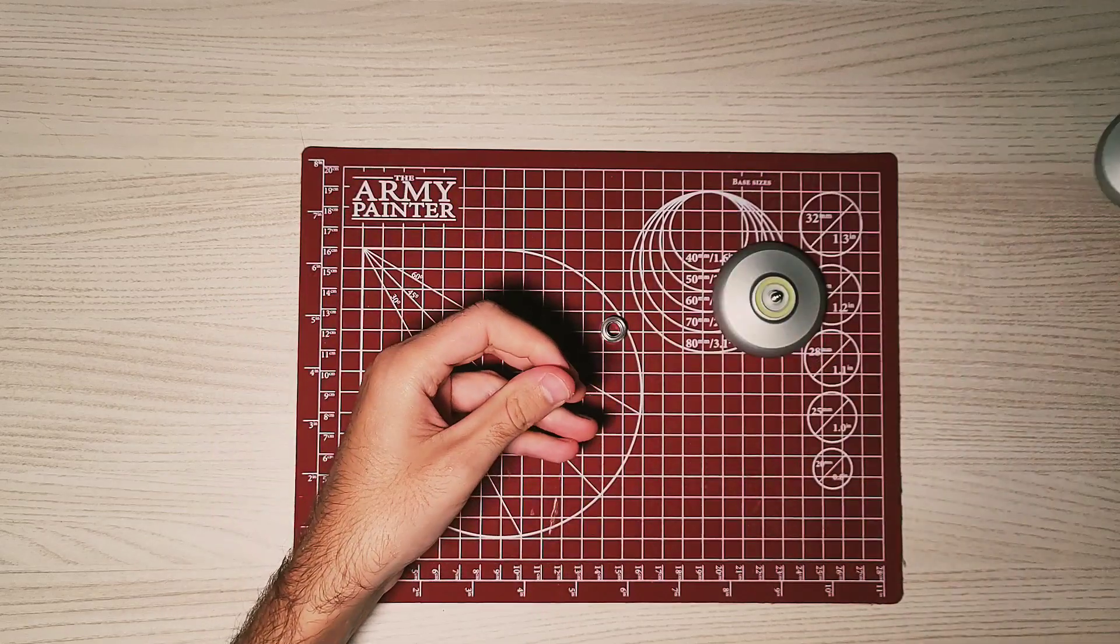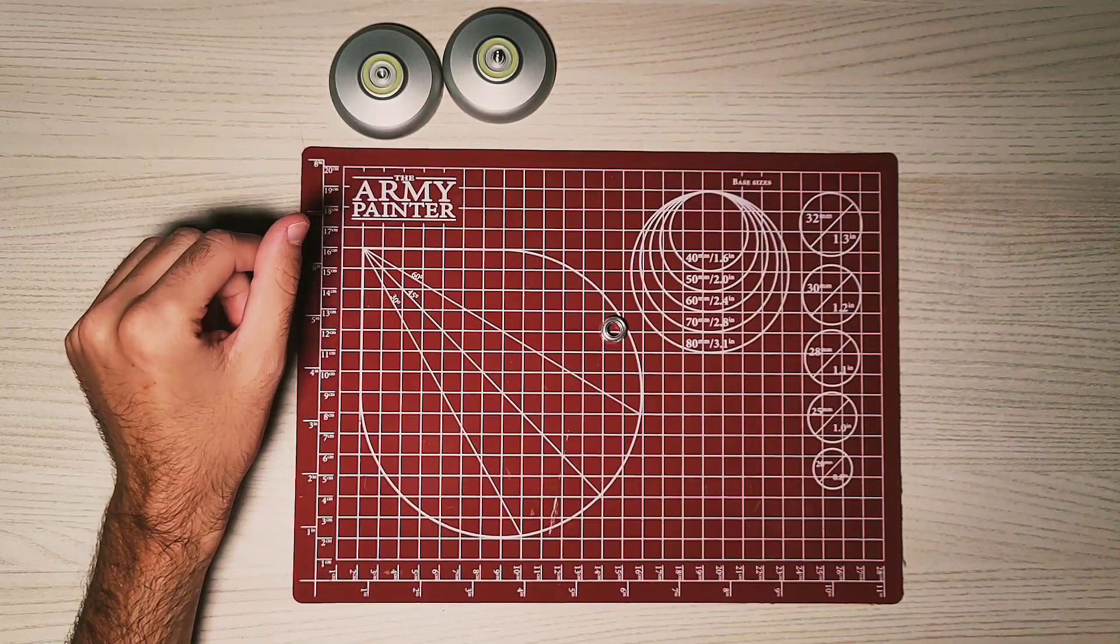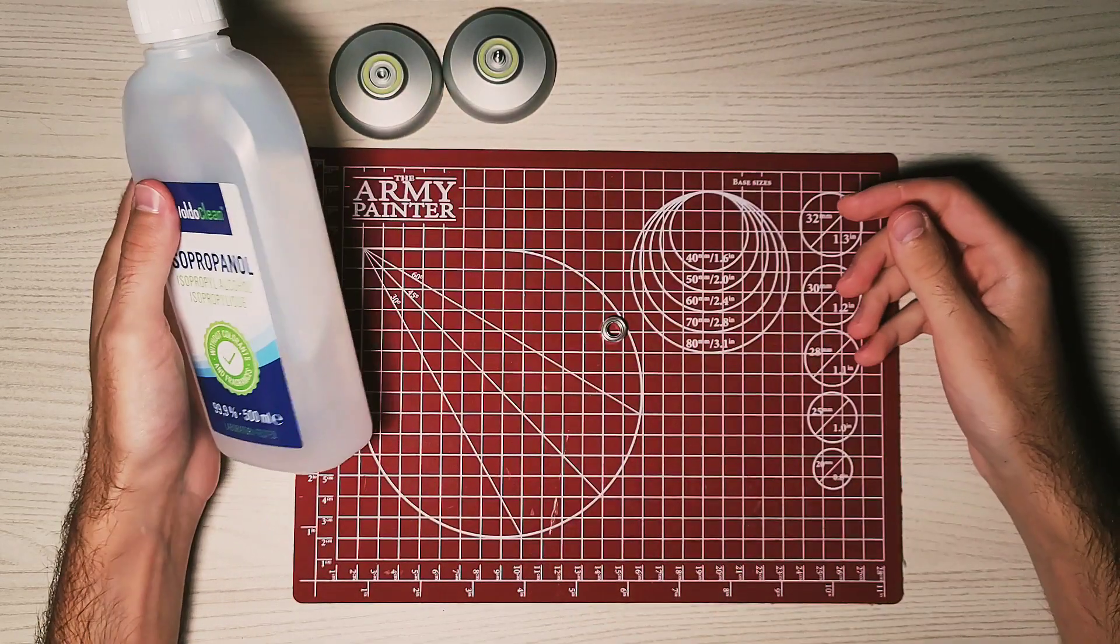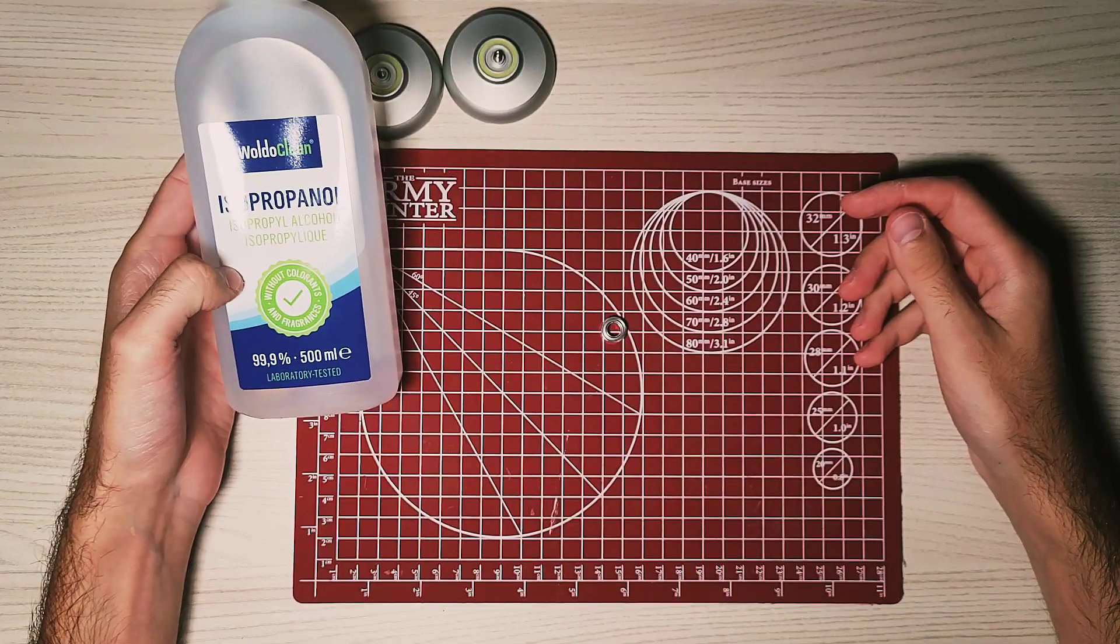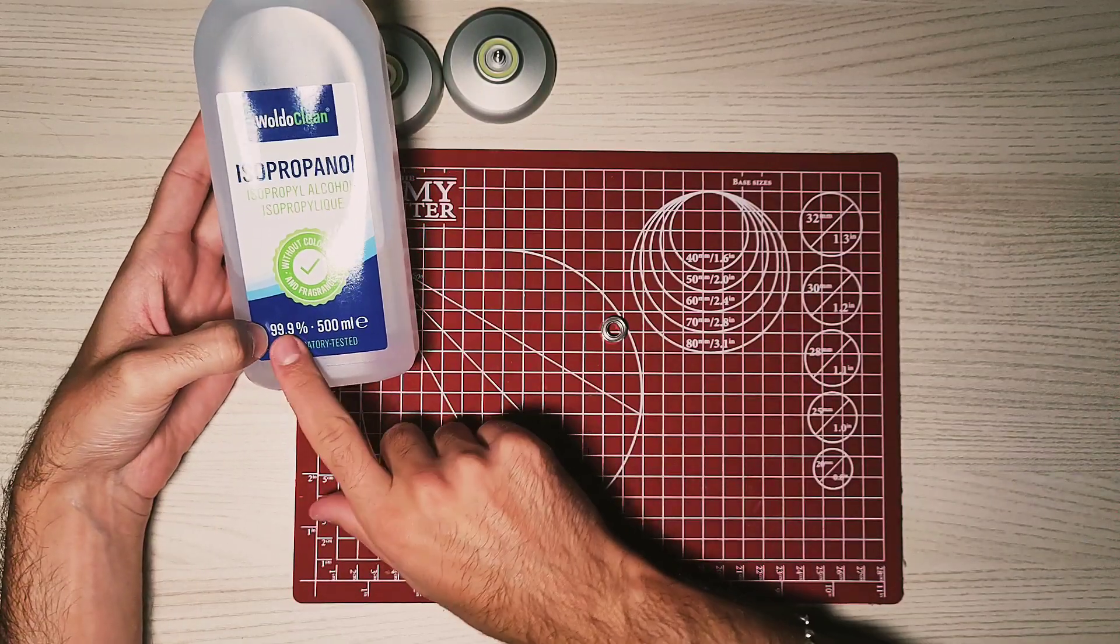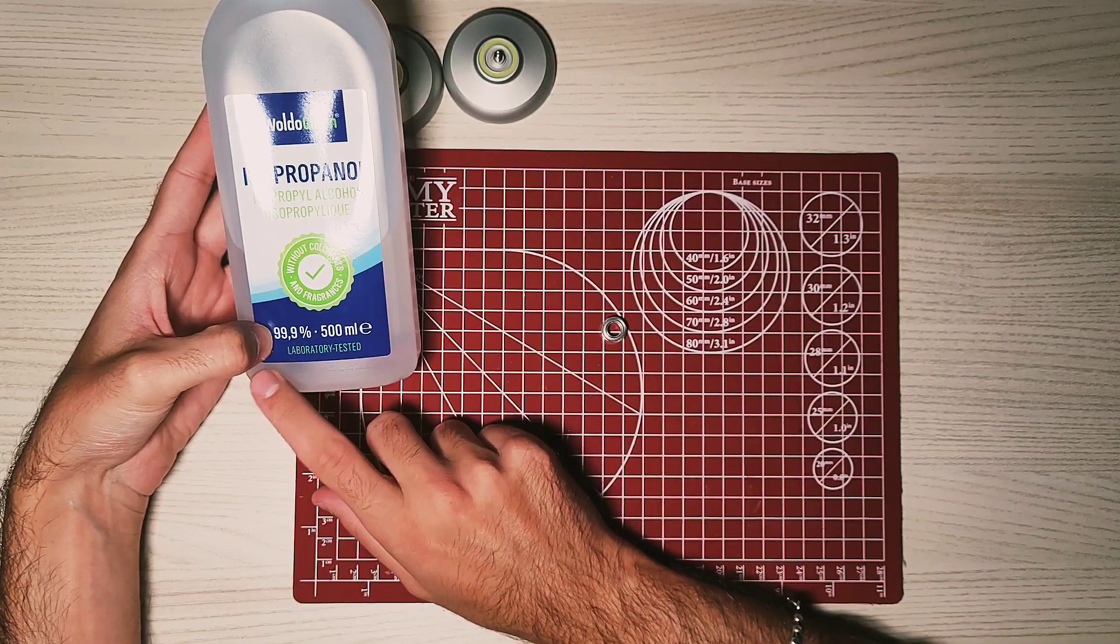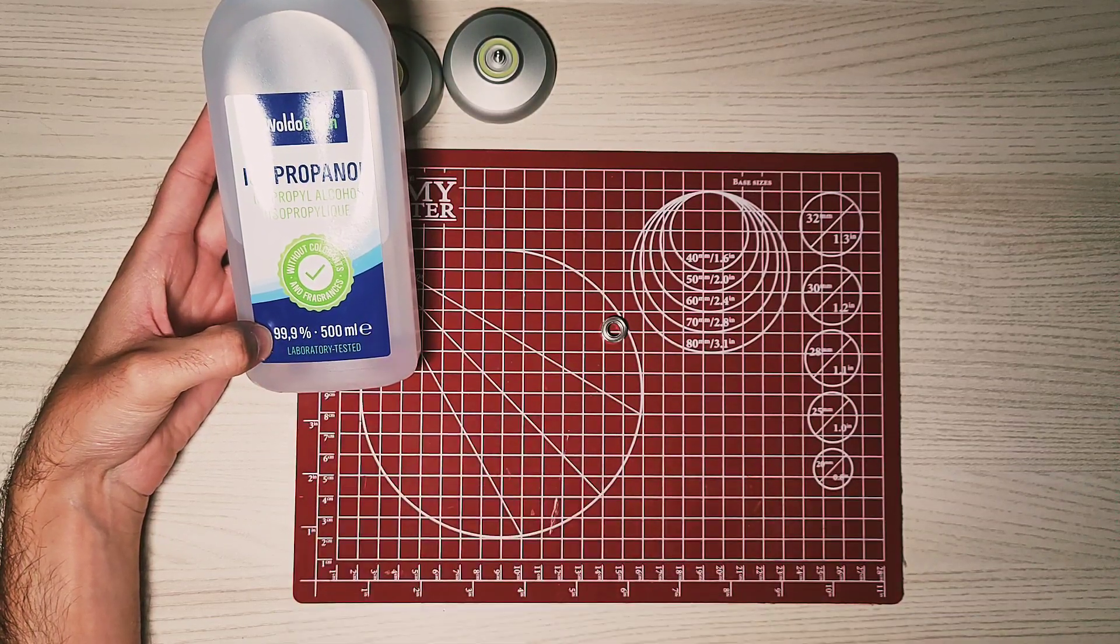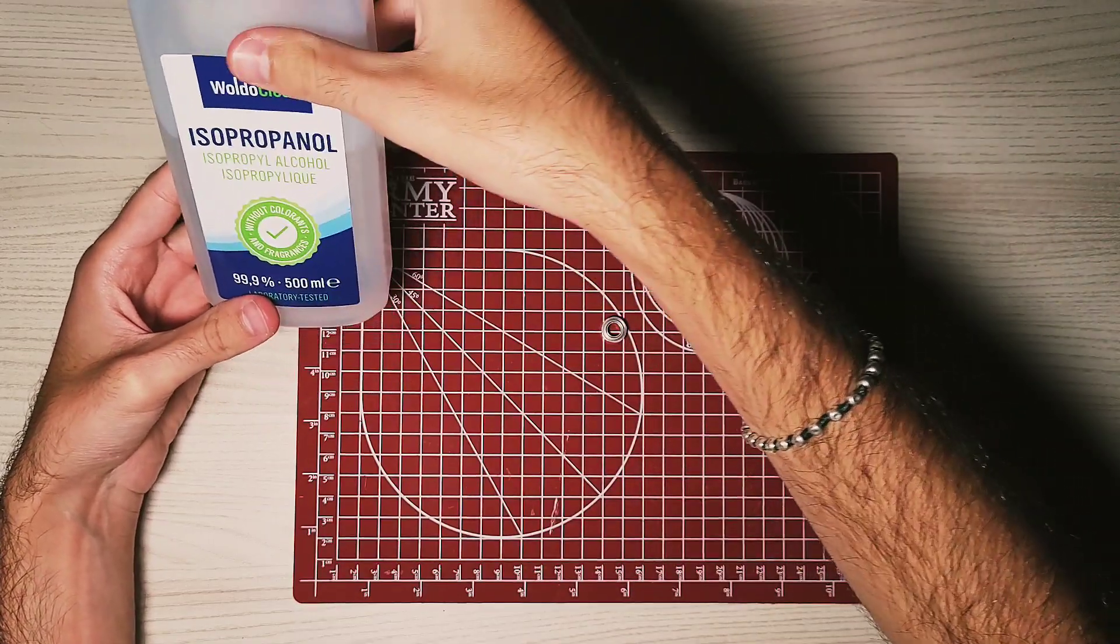First thing is to take the bearing apart. We will need isopropyl alcohol at 99.9%. Make sure it's a high percentage above 90% or it will leave residue.